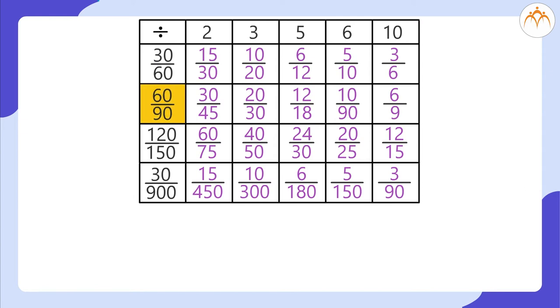60 divided by 90, dividing by 2, gives 30 divided by 45. Dividing 60 by 90 by 3 gives 20 divided by 30.